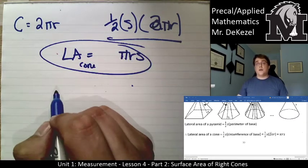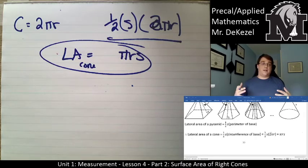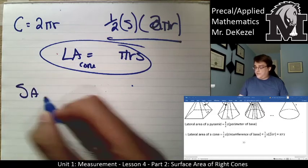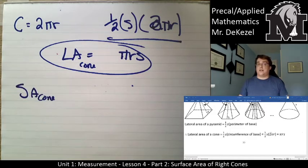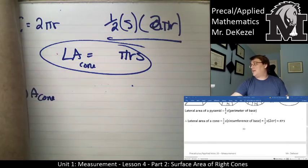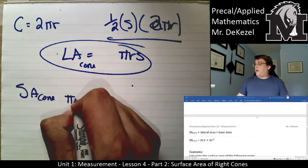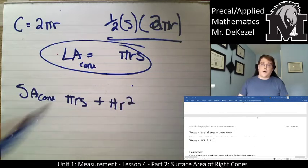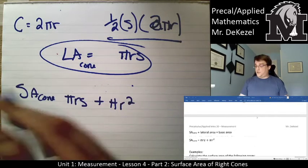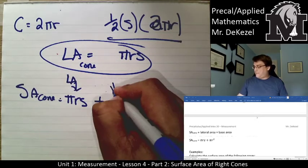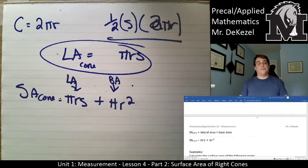If we add the base as well — the base is a circle, and the area of a circle is πr² — then the total surface area of the cone is πrs plus πr². There are two parts: πrs is the lateral area and πr² is the base area.